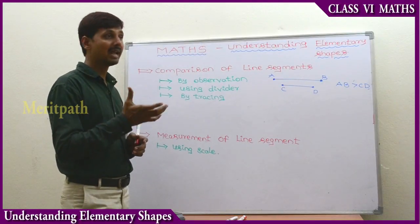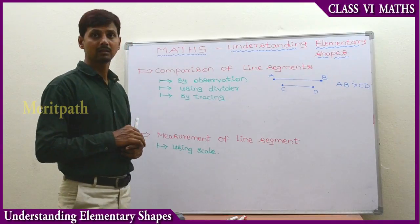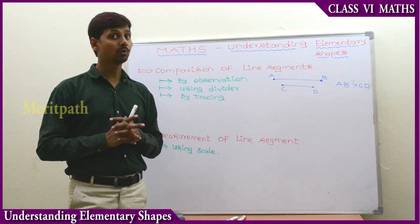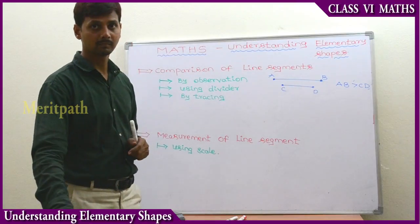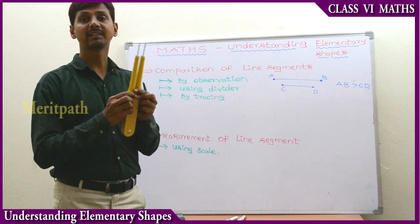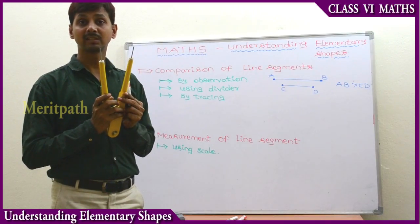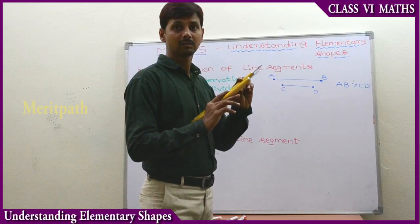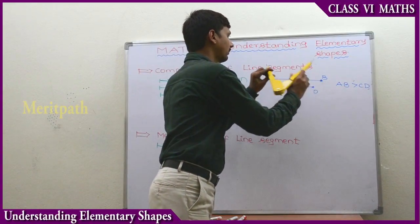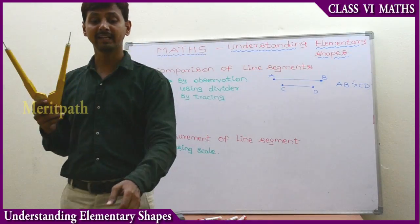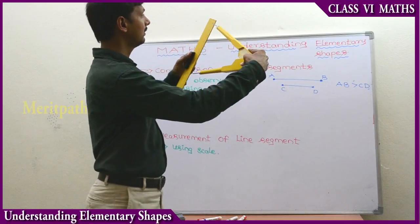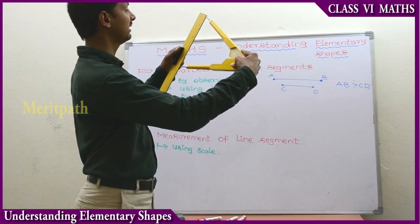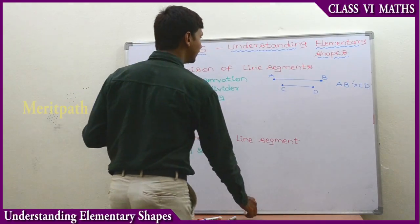This is the comparison of line segments by observation. We can also use a divider to compare two line segments. We take a divider and use it to measure the length of the first line segment AB. Using a scale, we measure it and get 24 centimeters. So AB is 24 centimeters.